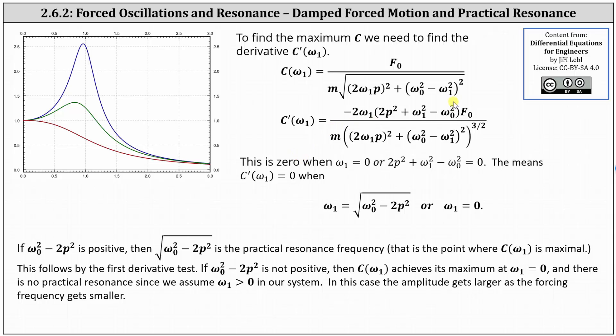The derivative is 0 when ω_1 equals 0 or when 2p² + ω_1² - ω_0² equals 0. Which means the derivative equals 0 when ω_1 equals the square root of (ω_0² - 2p²), or when ω_1 equals 0.